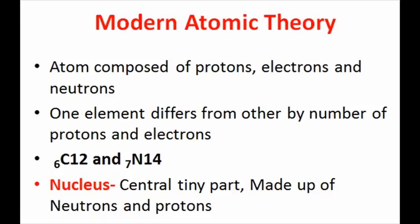The number of protons and electrons in an atom make one element different from another. For example, carbon has six protons and six electrons. Nitrogen has seven protons and seven electrons. The nucleus is the central positively charged part of the atom. The nucleus is made up of protons and neutrons, which are held together by a binding force.